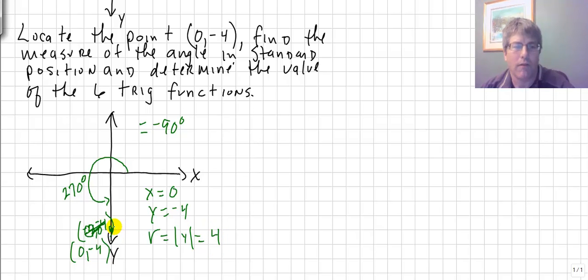and an r value of the absolute value of y, which is 4. So r is 4. And we could reduce this to 1 if we wanted to, but then we'd also have to reduce y to negative 1. So if we decided to, we could make this negative 1, and then this would be positive 1. But as long as these are the same, we're going to be fine here. So let's go ahead and do our six trig functions.